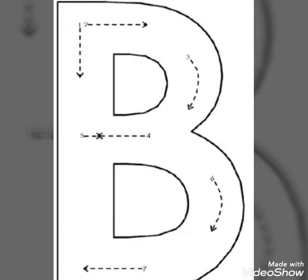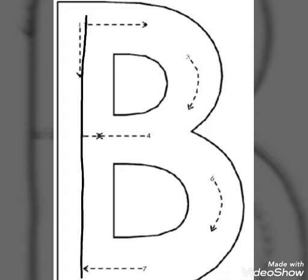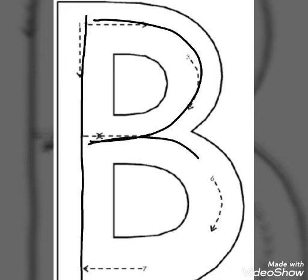The second letter is B. Start with me, all of you. See first, making a standing line, then curve line and again curve line.